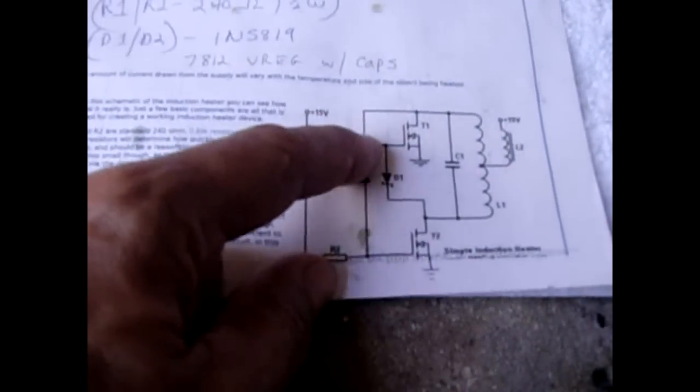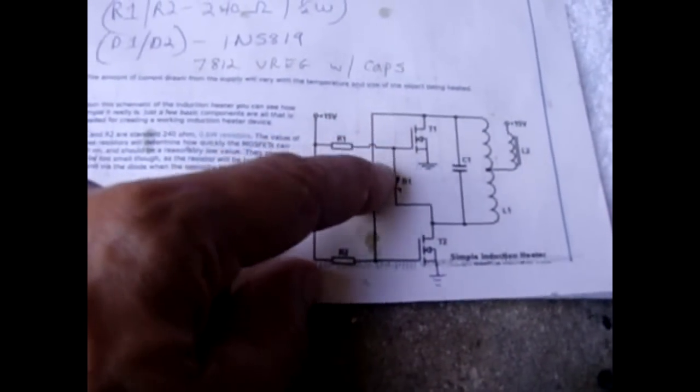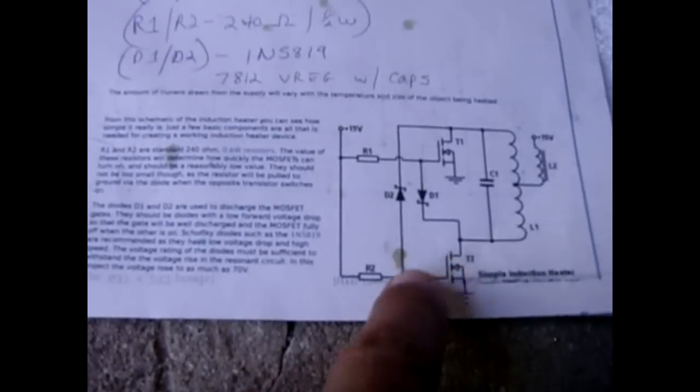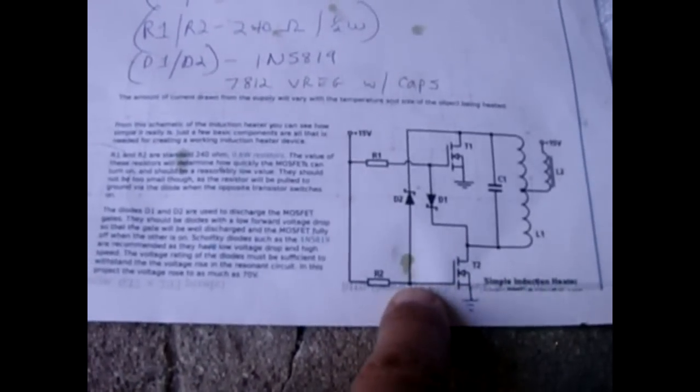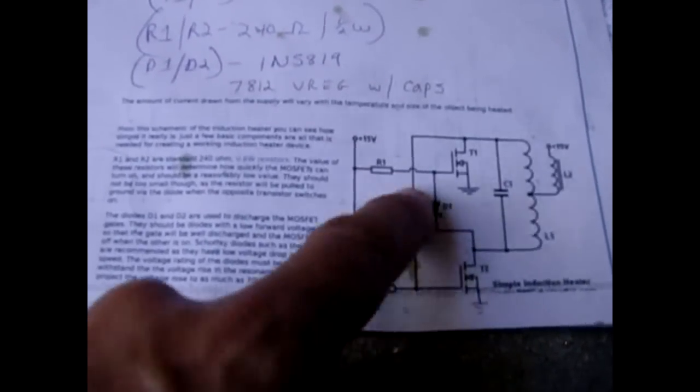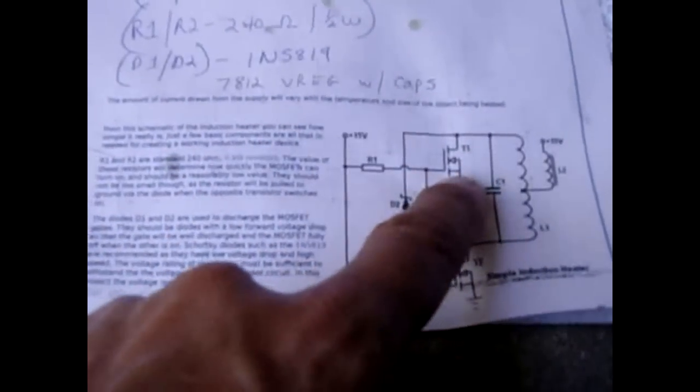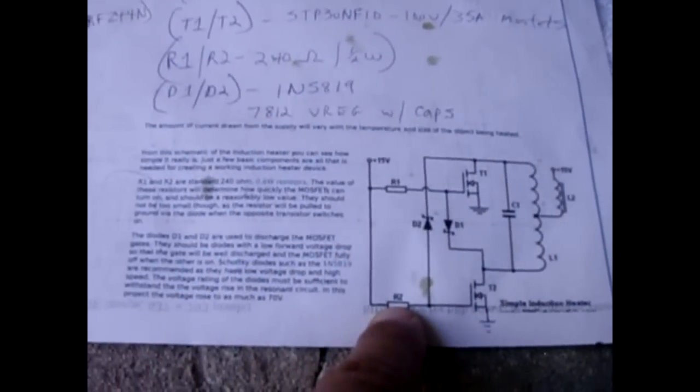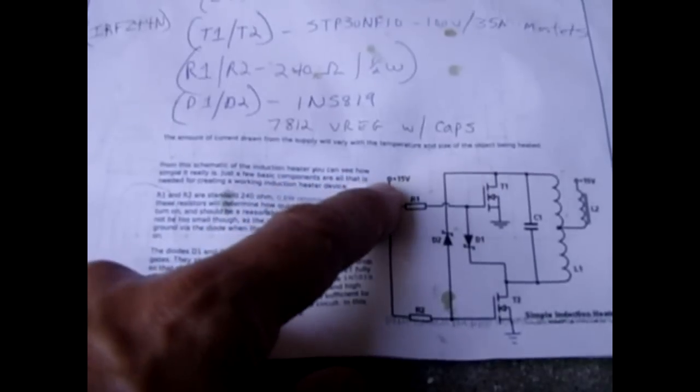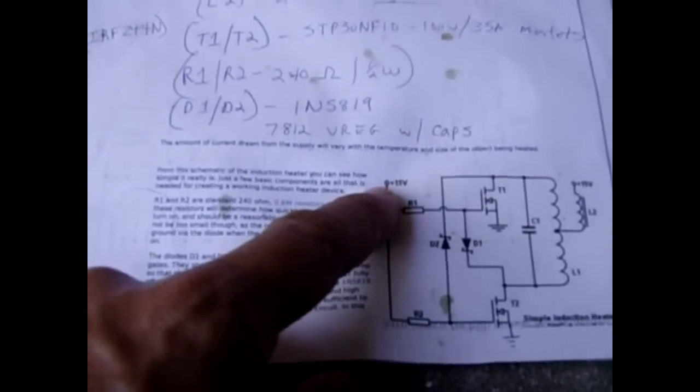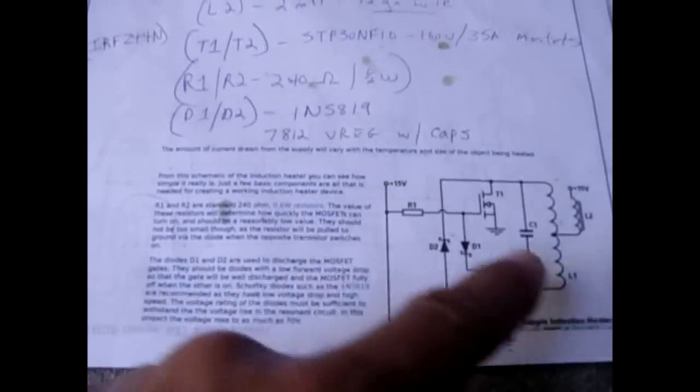Then you have from the gate of one MOSFET the Schottky diode into the drain of this MOSFET. And then you have the gate of this MOSFET with the Schottky diode going into the drain of this MOSFET. And both gates are supplied with a 200 ohm half watt resistor feeding into the 12 volt voltage regulator, the 7812 with the capacitors. And that is it.